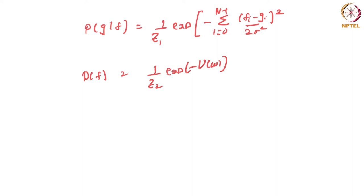What is U(ω)? It is referred to as a clique potential. Cliques are basically groups of pixels — given a neighborhood, you consider how many ways you can split them into pairs, threes, fours at a time. You define spatial adjacency and based on that you define these potentials.